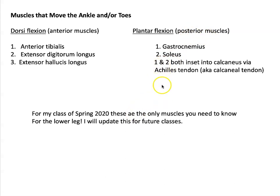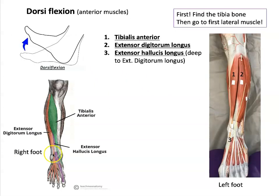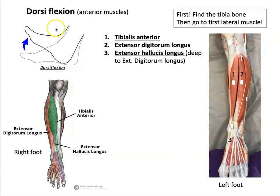There are a lot more muscles on the lower leg, including deep muscles, but for spring 2020 we're not going to look at them — it's just too much with COVID-19. So these are the only muscles you need to know on the lower leg. For dorsiflexion, here's the dorsum of the foot being pulled upwards towards the shin. These are all anterior muscles — you can feel them if you dorsiflex your own foot.